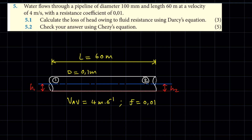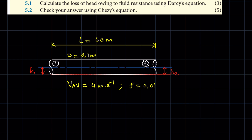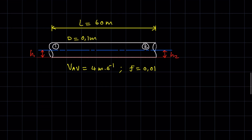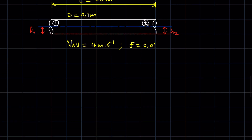Now let's look at 5.1: calculate the loss of head owing to fluid resistance using Darcy's equation. So the loss of head we look at here is the frictional head loss. They want us to calculate the frictional head loss using Darcy's formula. Since they've given us the velocity, we are going to use the velocity variation of Darcy's formula.